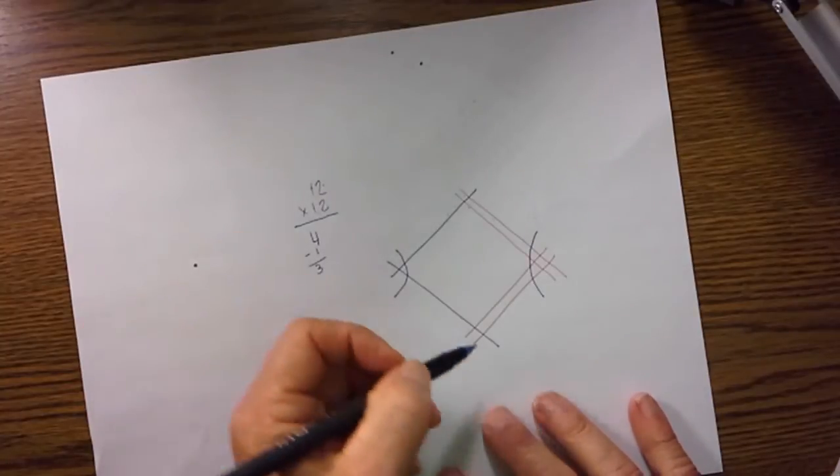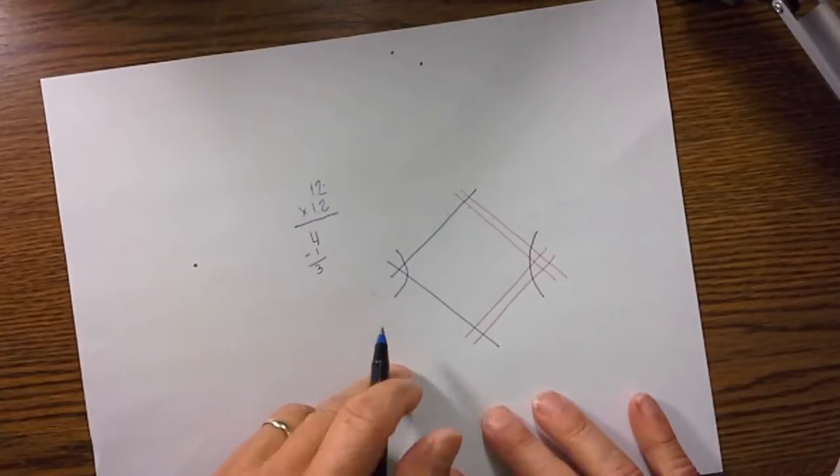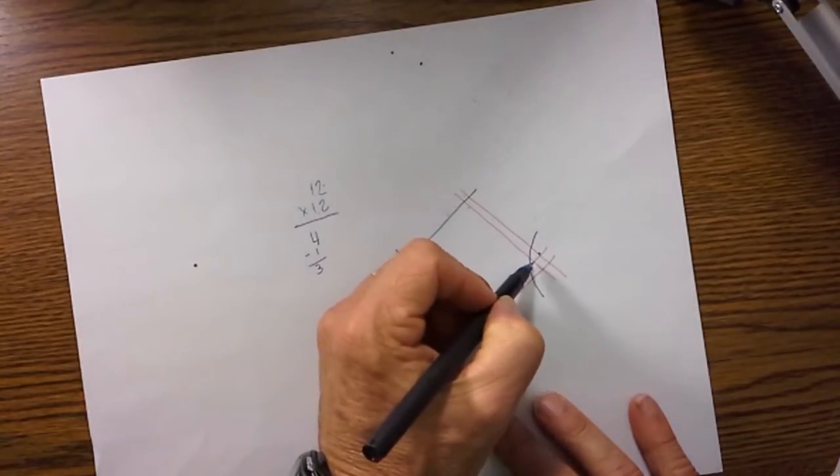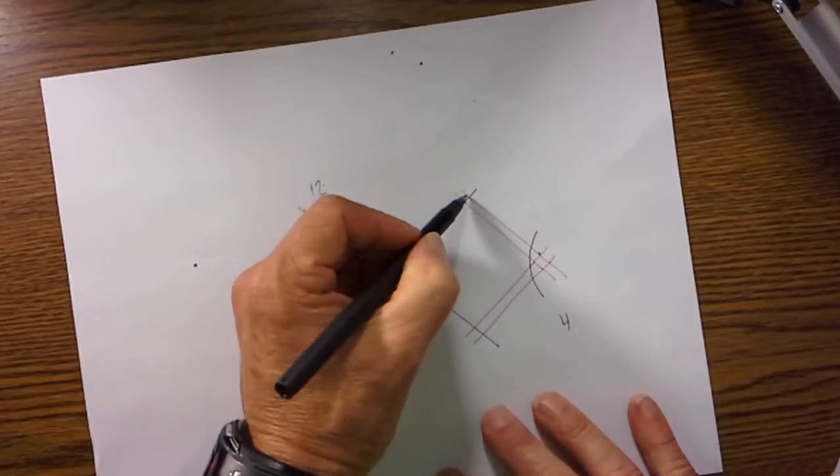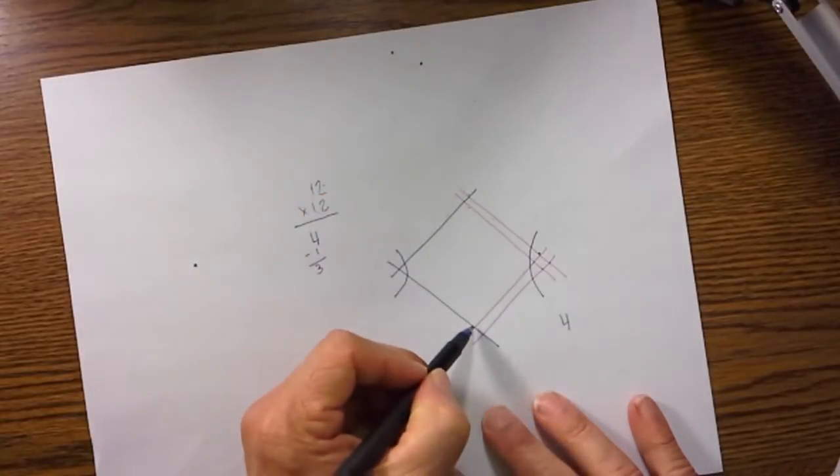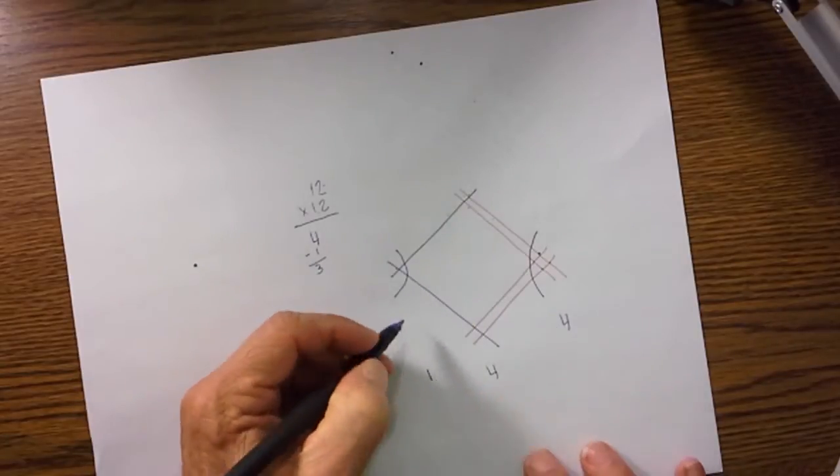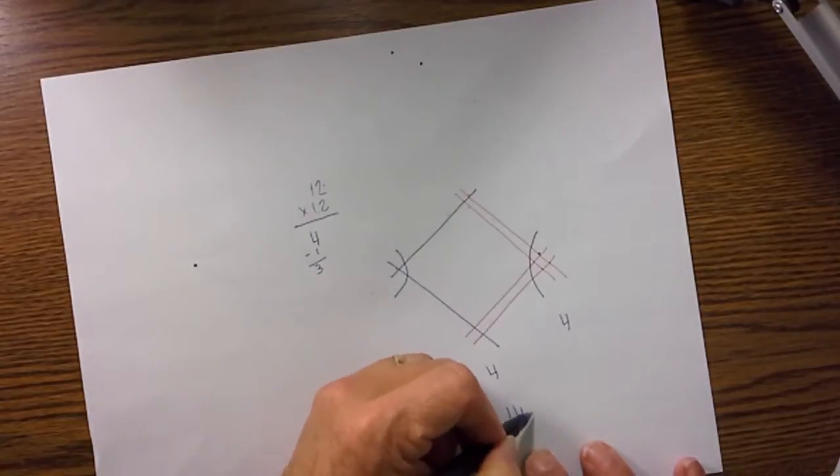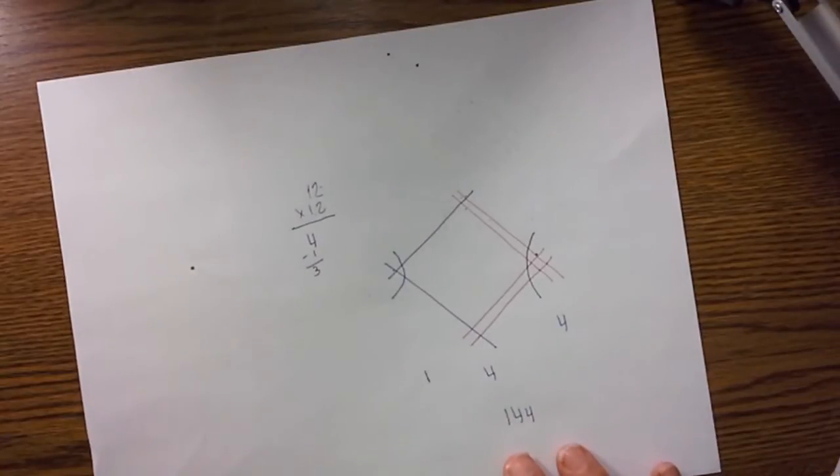So anyway then all we do is we count how many intersections we have in each point, so we have one, two, three, four, so that's a four. This is one, two, three, four here, and then we have one there. We write these numbers down and that becomes 144. Pretty easy.